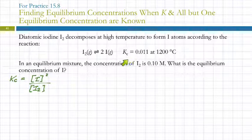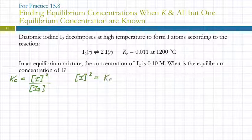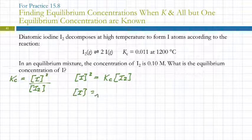We have the equilibrium constant and the equilibrium concentration for I₂ — we're only missing one thing. You can either plug the numbers in and then rearrange, or rearrange first. Rearranging first: we're solving for I, so I squared equals Kc times the concentration of I₂. Then take the square root: the equilibrium concentration of I equals the square root of Kc times [I₂].